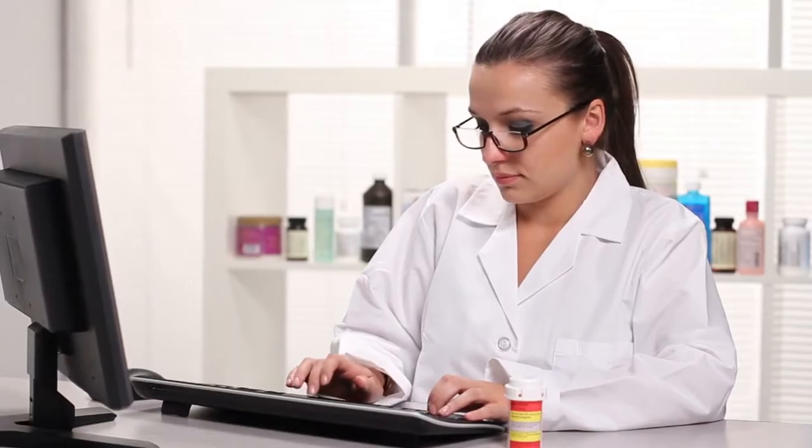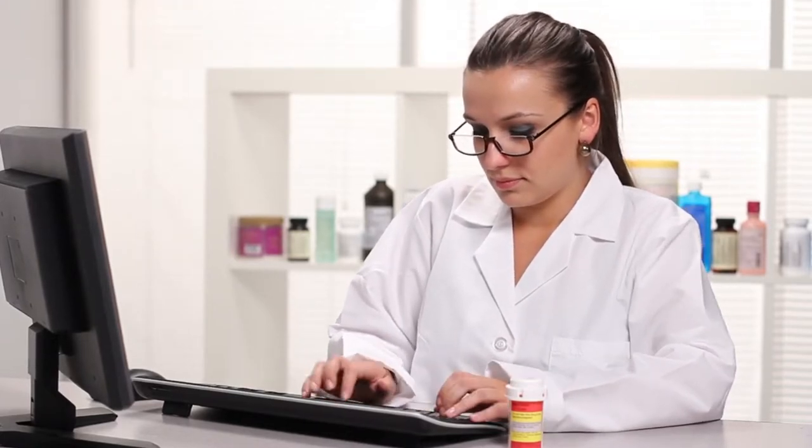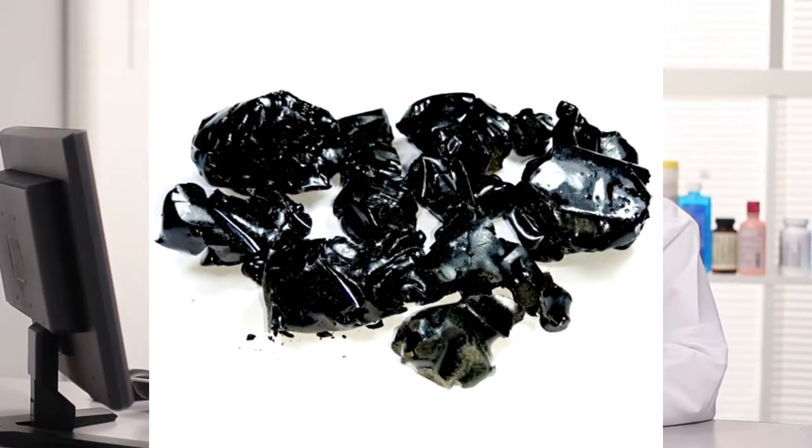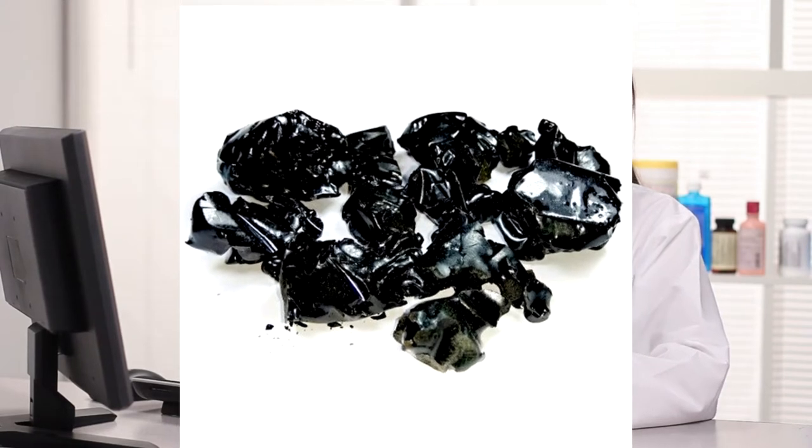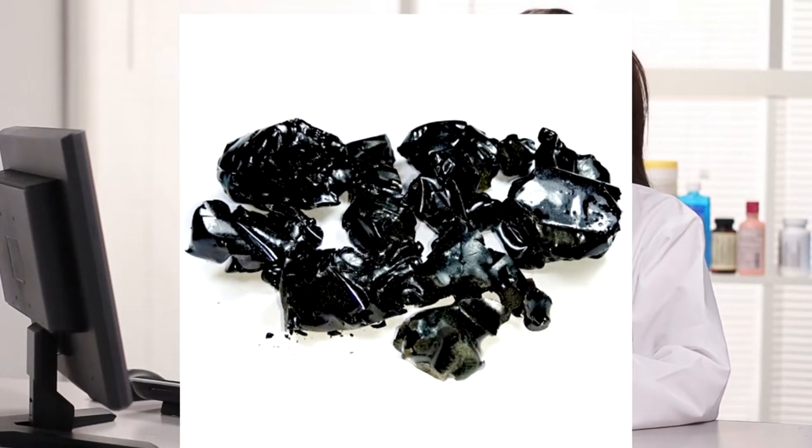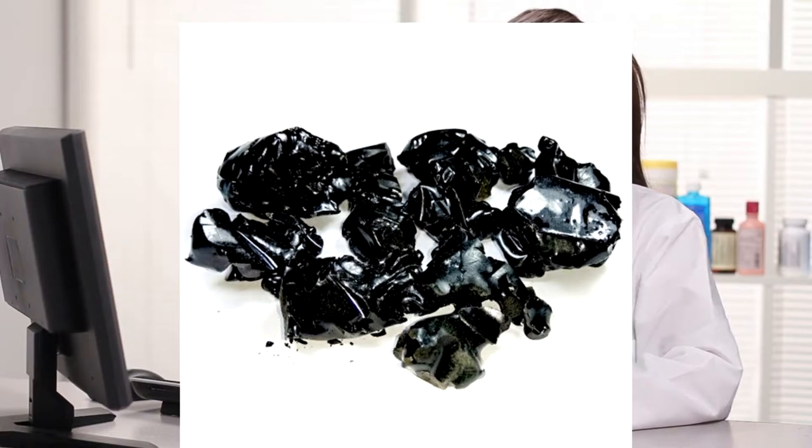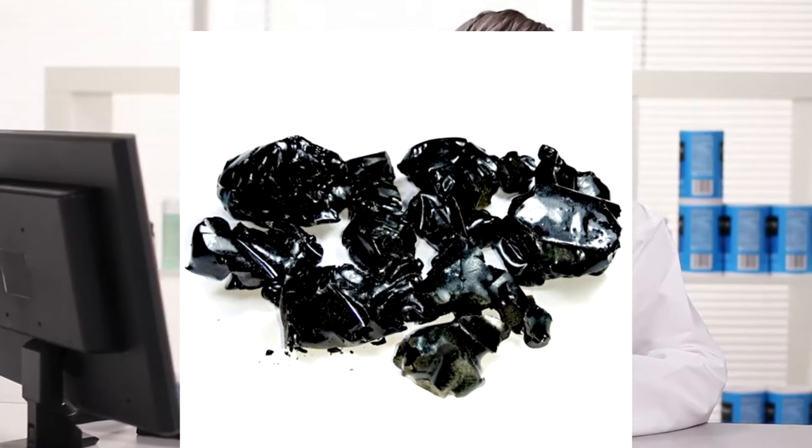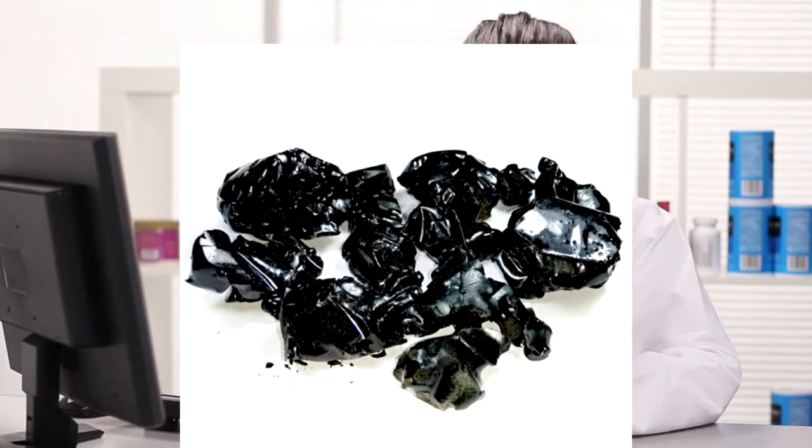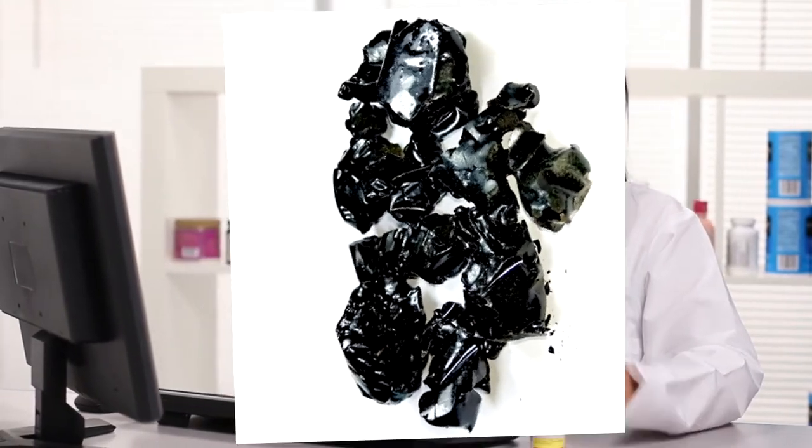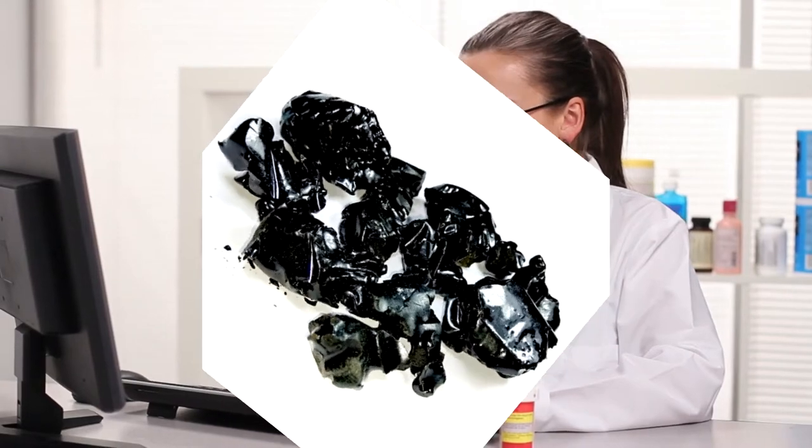The primary component of Shilajit is an antioxidant known as fulvic acid. This powerful antioxidant contributes to cognitive health by preventing the accumulation of tau protein. Tau proteins are an important part of your nervous system, but a buildup can trigger brain cell damage. Researchers think that the fulvic acid in Shilajit may stop the abnormal buildup of tau protein and reduce inflammation, potentially improving Alzheimer's symptoms.